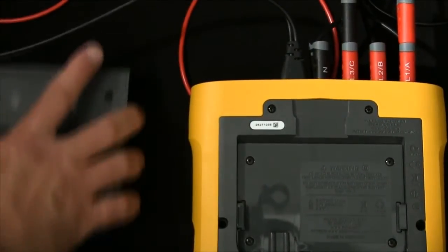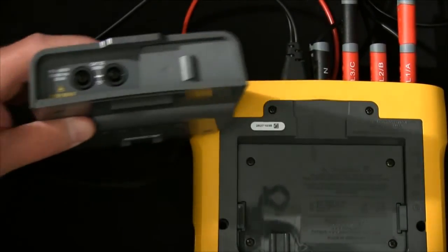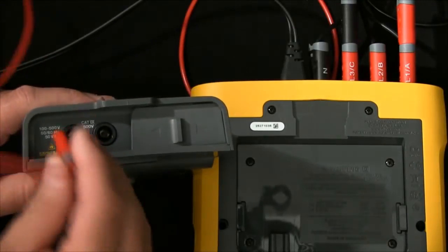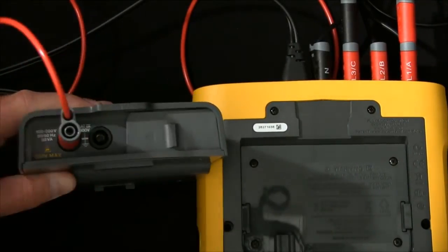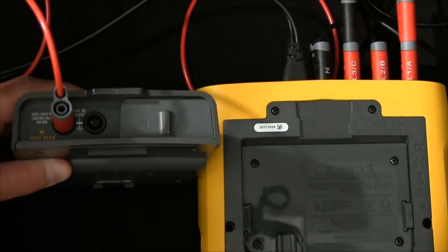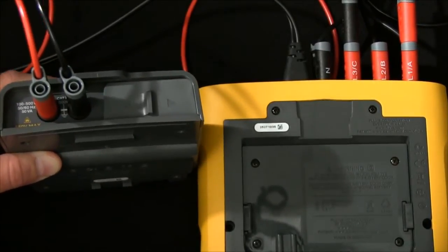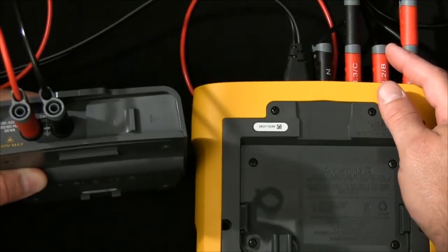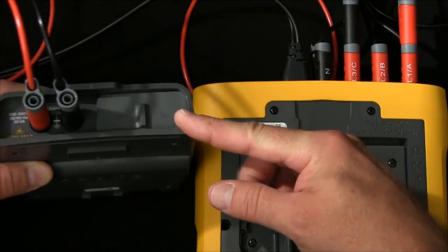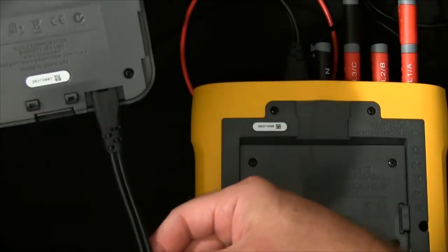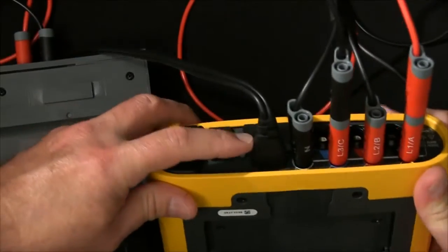On the power supply, we would then connect the red wire to the left connection and the black wire to the right connection. Now we have power from what we're measuring to the power supply and then the DC out goes to the instrument.